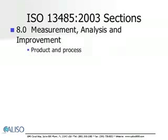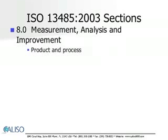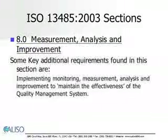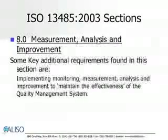Section 8.0 talks about how to improve not only the product, but the process by which it is manufactured, and also how to improve your quality management system. Continually improve and maintain, implement and maintain — those are consistent words throughout this standard — the effectiveness of the quality management system. Some key additional requirements found in this section are implementing, monitoring, measurement, analysis, and improvement to maintain the effectiveness of the quality management system.